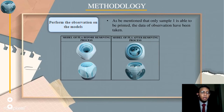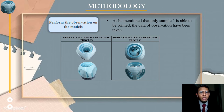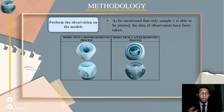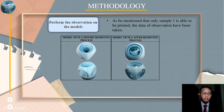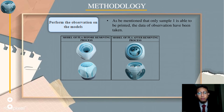After finishing the printing process, I did some observation on the model. As mentioned, only Sample 1 was able to be printed, and the data of observation has been taken. On the left side is the condition of the PLA model before the removing process, showing the support on the gyro. On the right side is the condition after the support removal process.